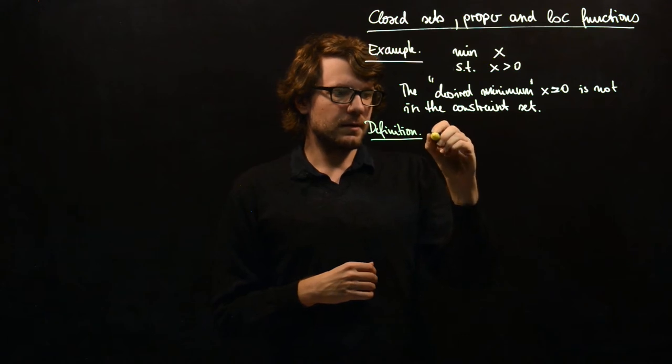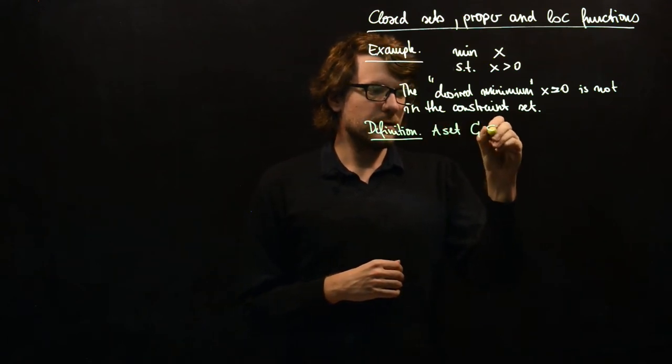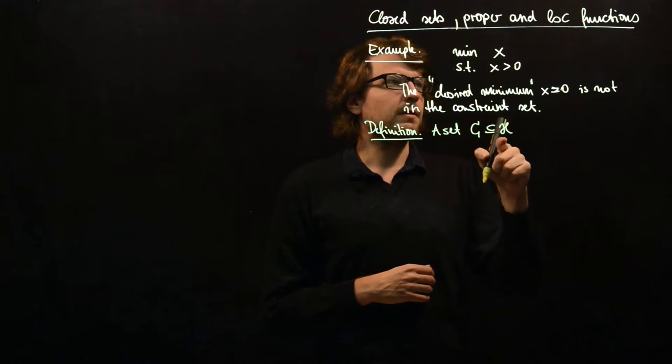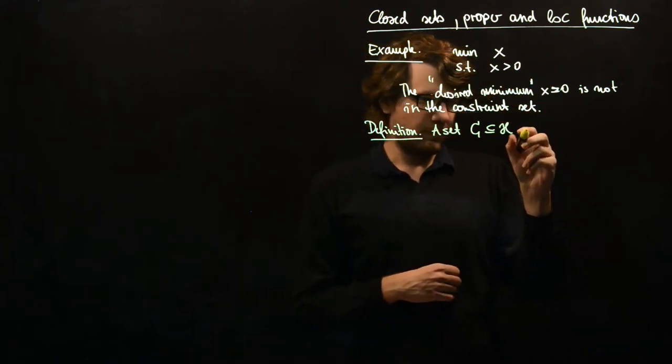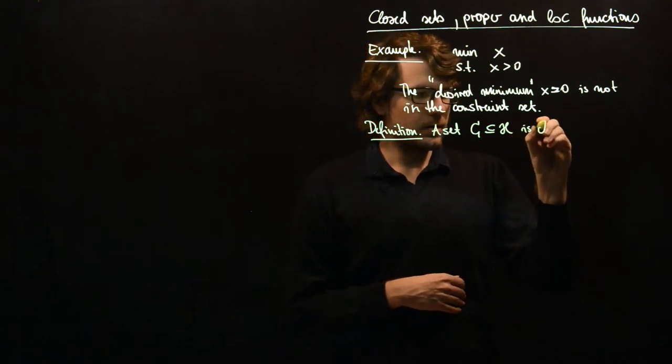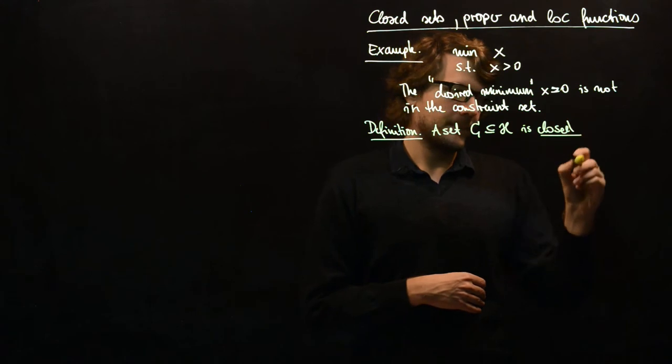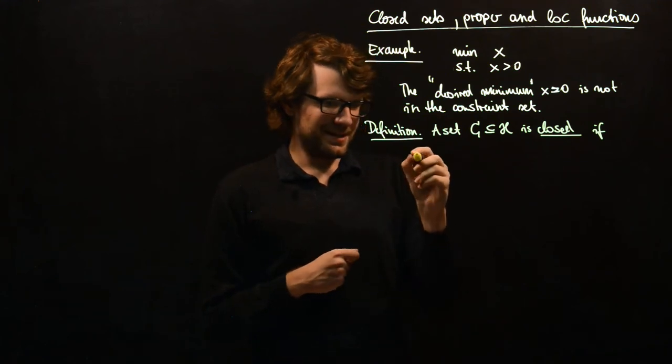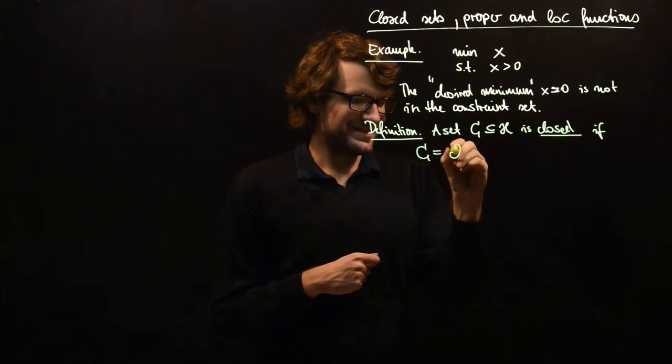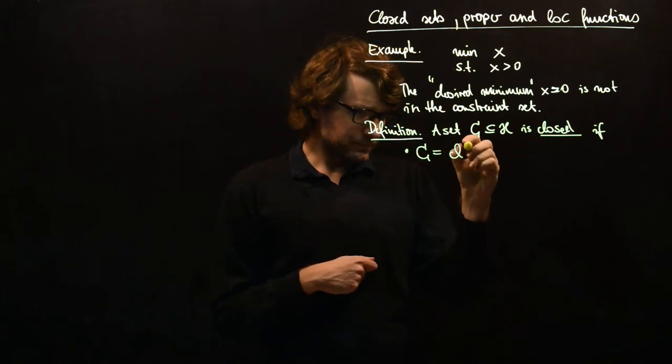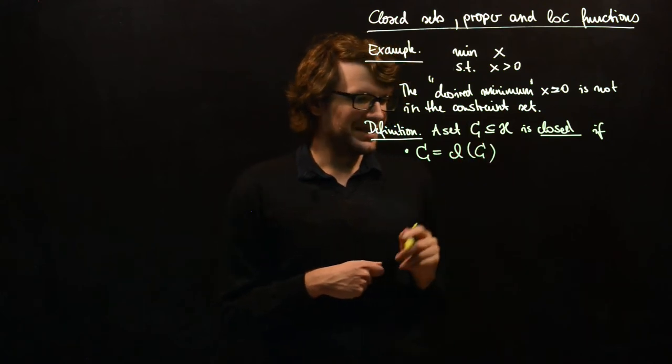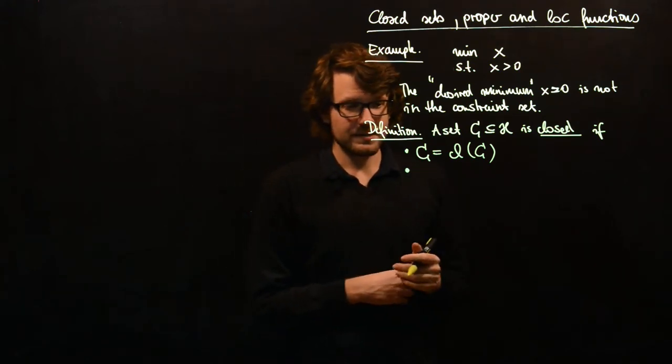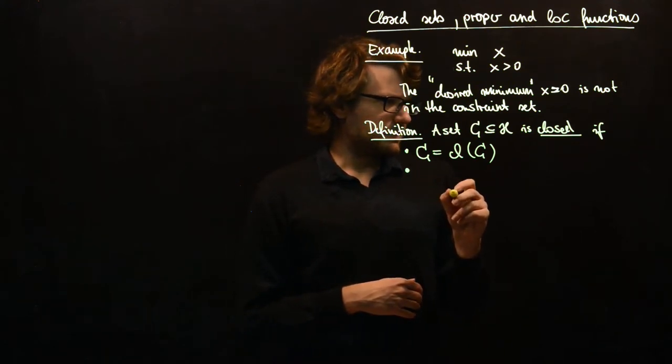The assumption is the set C, I don't assume that the set is convex here, and this is a subset of our usual finite dimensional product space is closed. There are two equivalent definitions I want to give you. The first one is that it's equal to its closure. You know what the closure is from the first exercise.